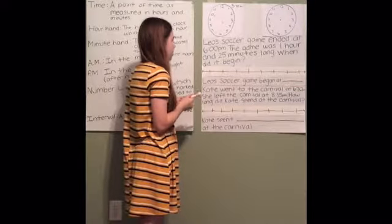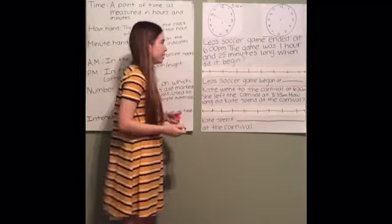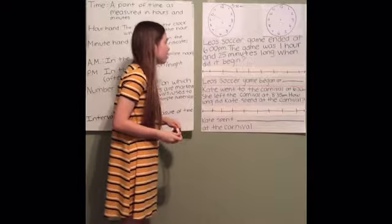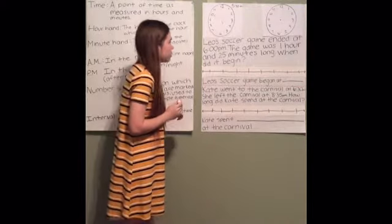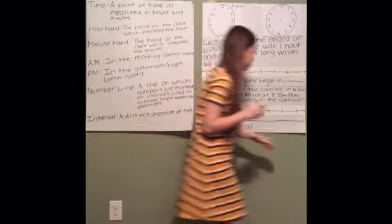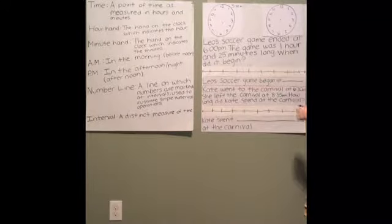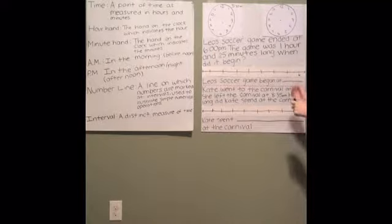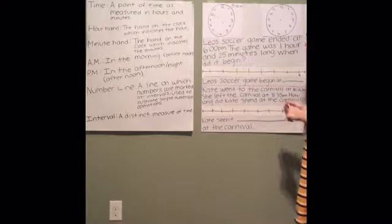So now we're going to go down to the next word problem right here, and it says: Leo's soccer game ended at 6 p.m. The game was 1 hour and 25 minutes long. When did it begin? So we know that Leo's soccer game ended at 6 p.m., but we don't have a starting point like we did for the other problem.